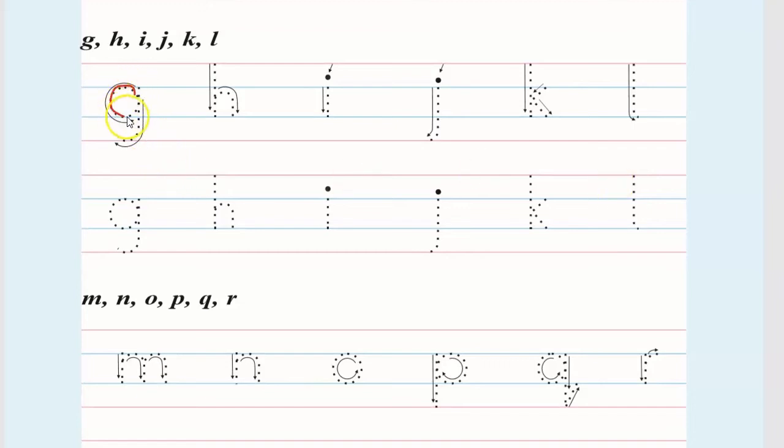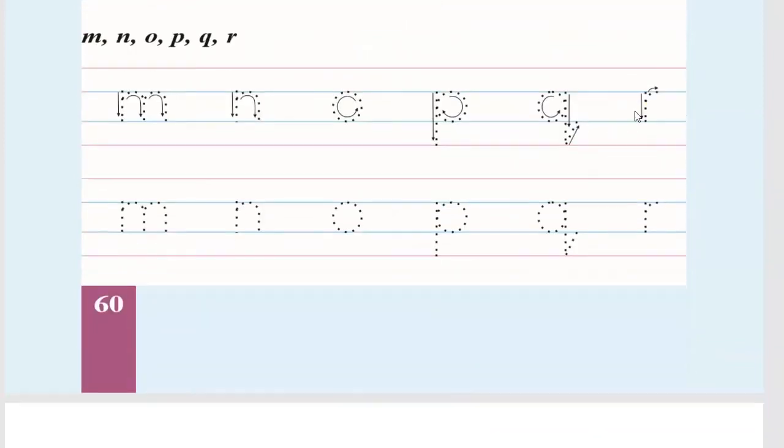G for Grapes. Like this, draw it on dots. If you have dots, you will trace it. H for Hen. I for Ice Cream. J for Jug. K for Kite. L for Lion.